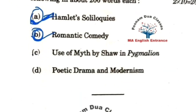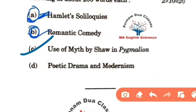Regarding the use of myth by Shaw in Pygmalion: the myth of Pygmalion and Galatea is about a sculptor who fell in love with his own sculpture. He prays to goddess Aphrodite to bring the sculpture to life so she can be his wife, and the goddess grants his wish. Pygmalion and his creation Galatea then lived happily ever after. This myth is represented in a modern-day setting in Shaw's Pygmalion, with Eliza as Galatea.